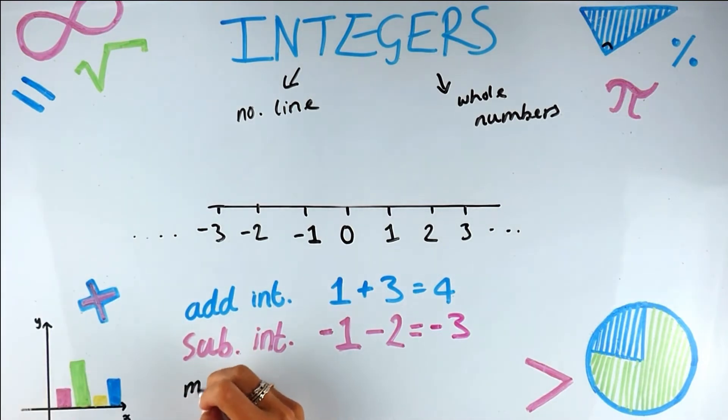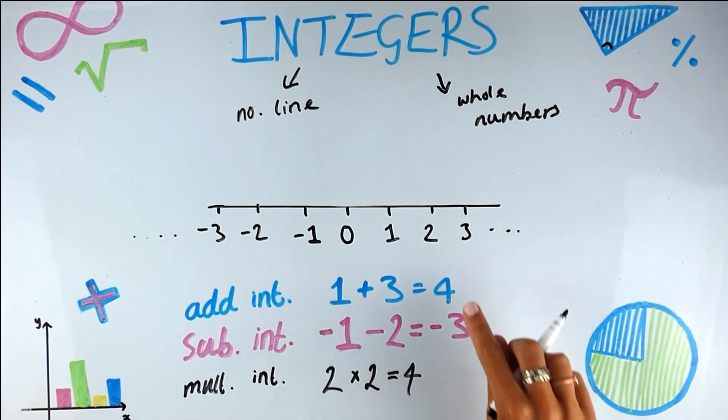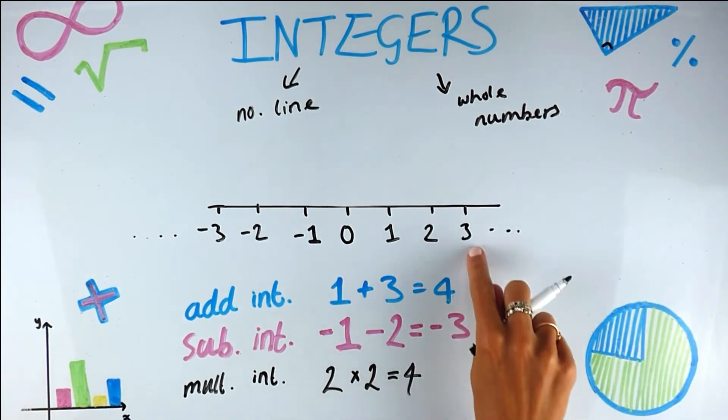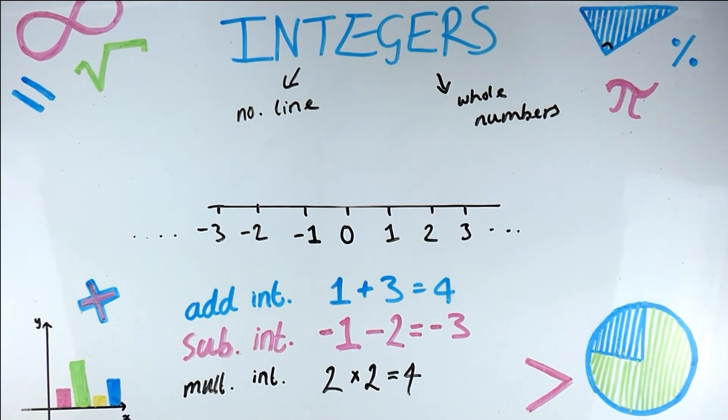What if we mult int? Okay, so let's take two, which is an integer, multiplied by two, which is an integer. We get four. So four, three, four - they would all appear on the number line. They are all whole numbers, so they are also integers.